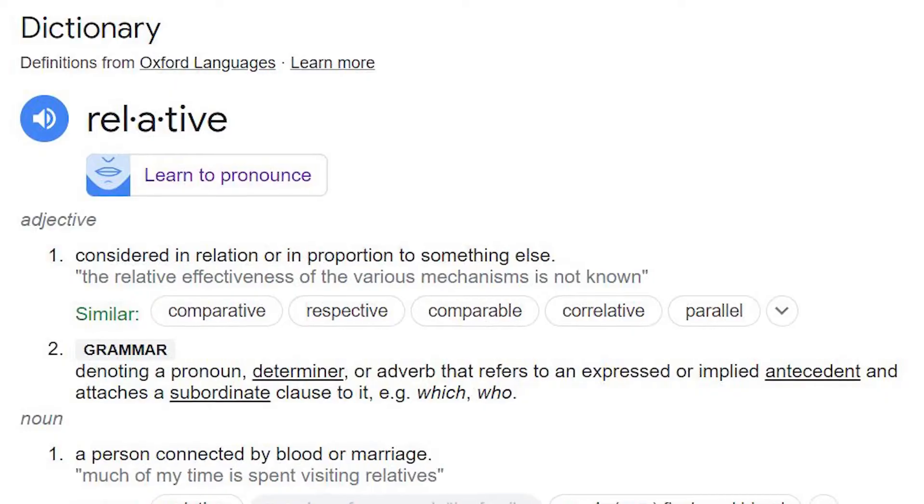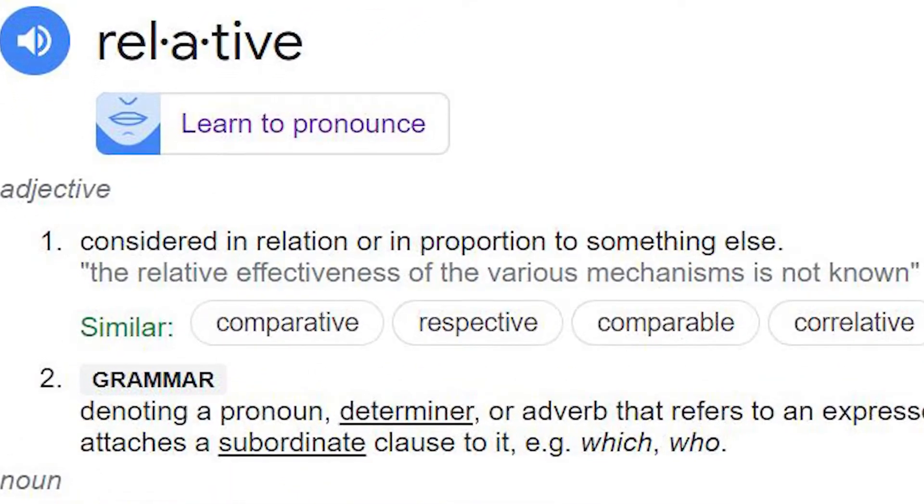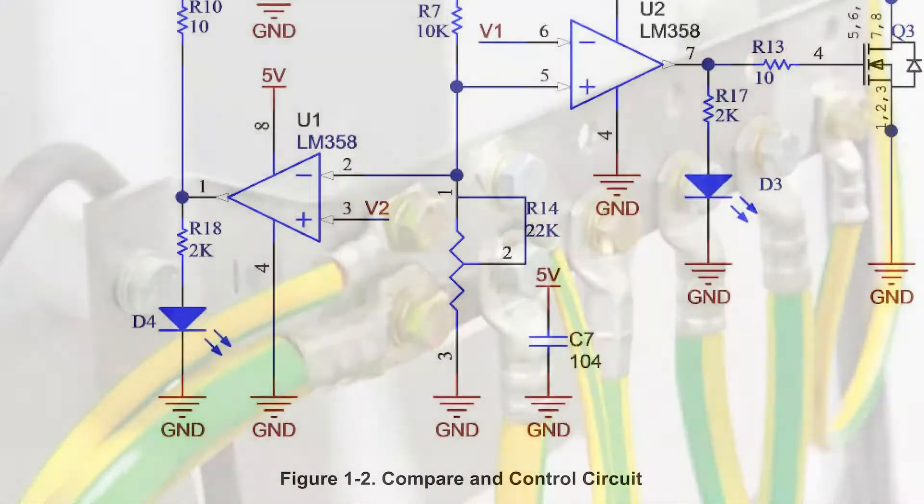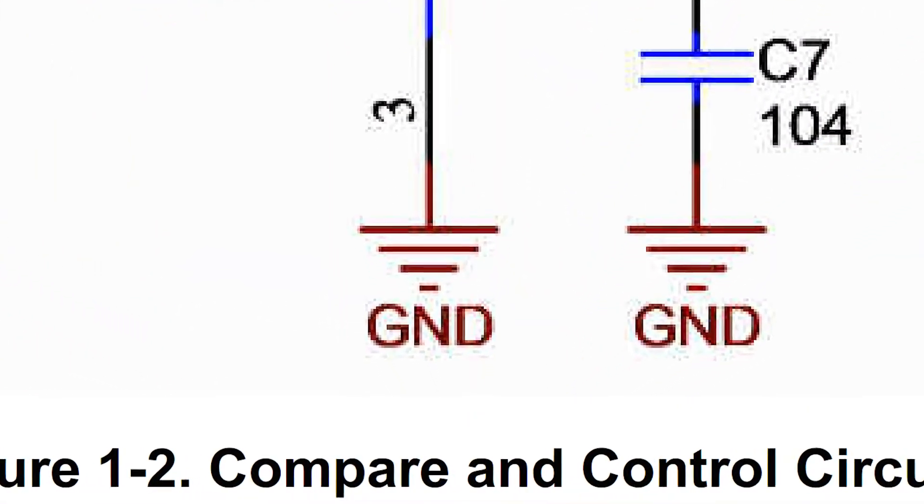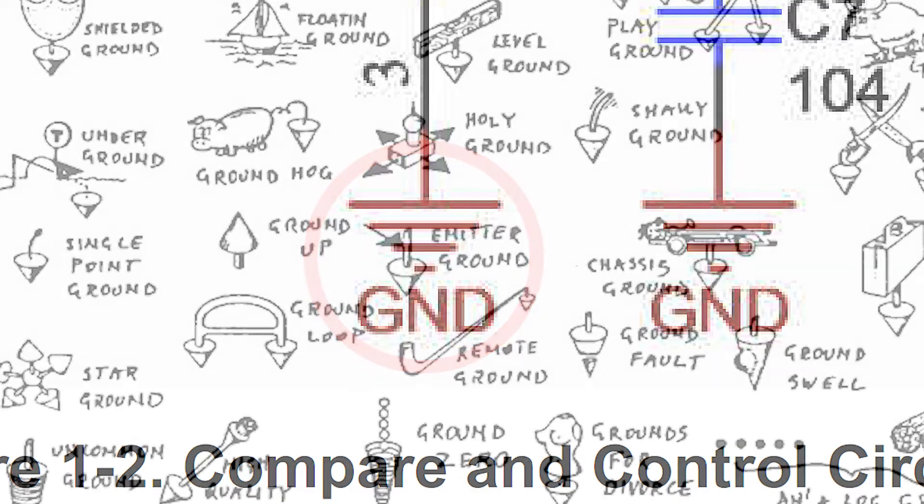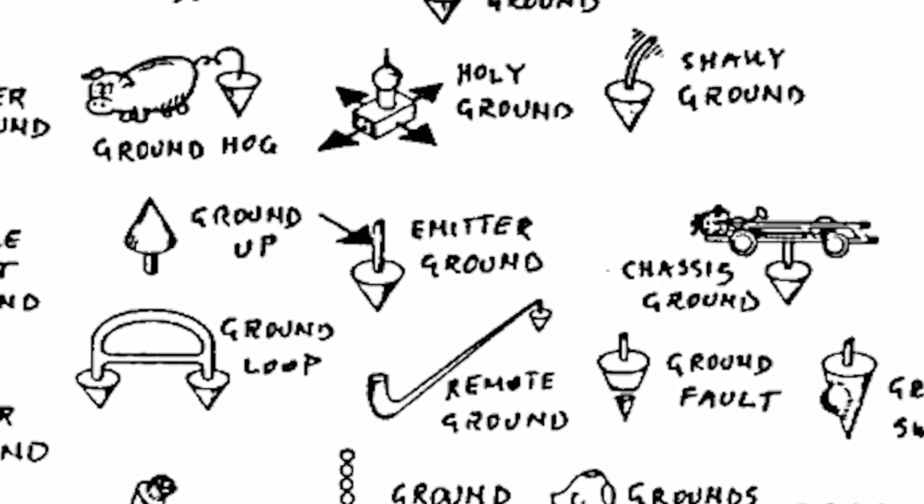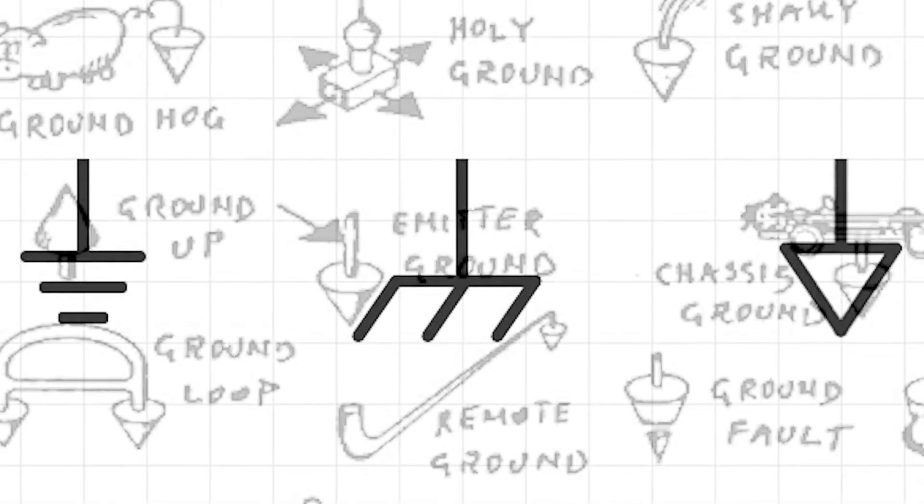Since all our voltage readings are relative, it's really important that we define what our relative reference point is. In a typical circuit we measure voltages with respect to ground. Ground is just a point in the circuit that we've defined to be our zero volt reference. Now the concept of ground gets pretty deep and I could probably do a whole other video on it. For now you can just think of it as an arbitrarily defined zero volt reference point in our circuit.